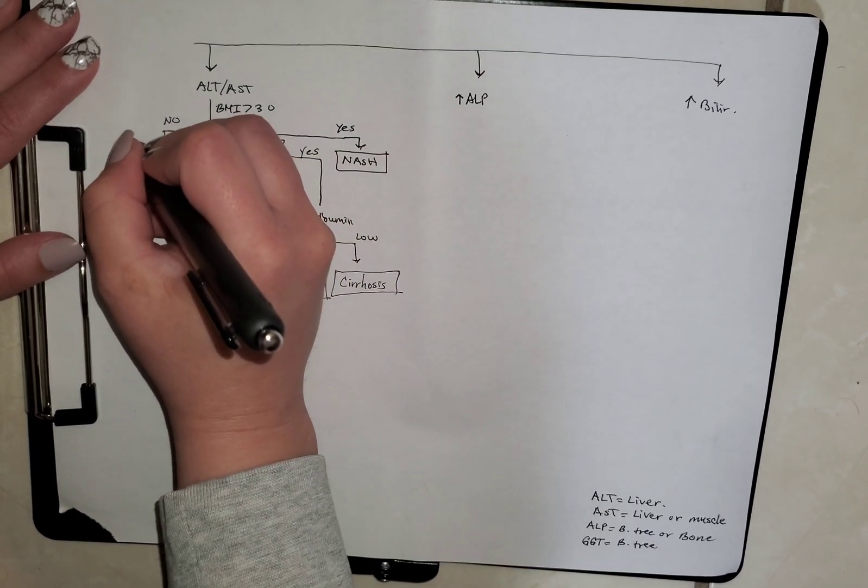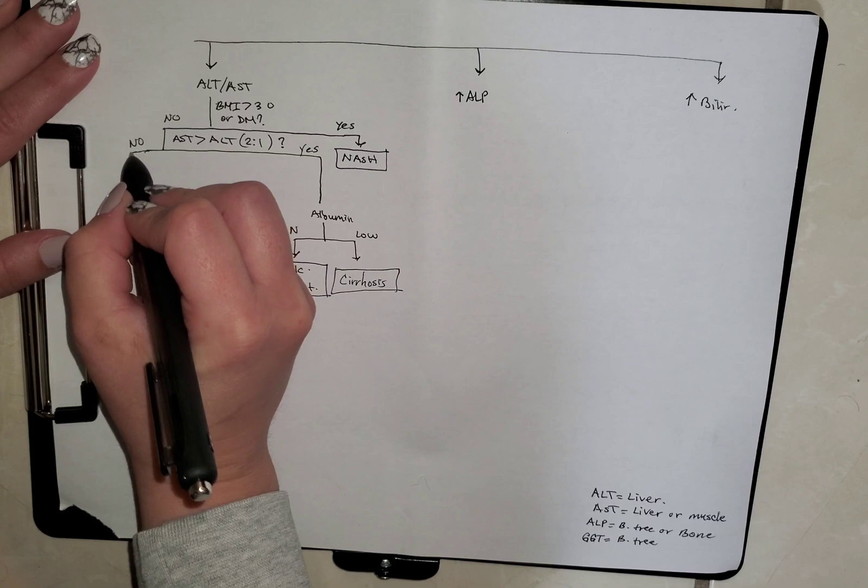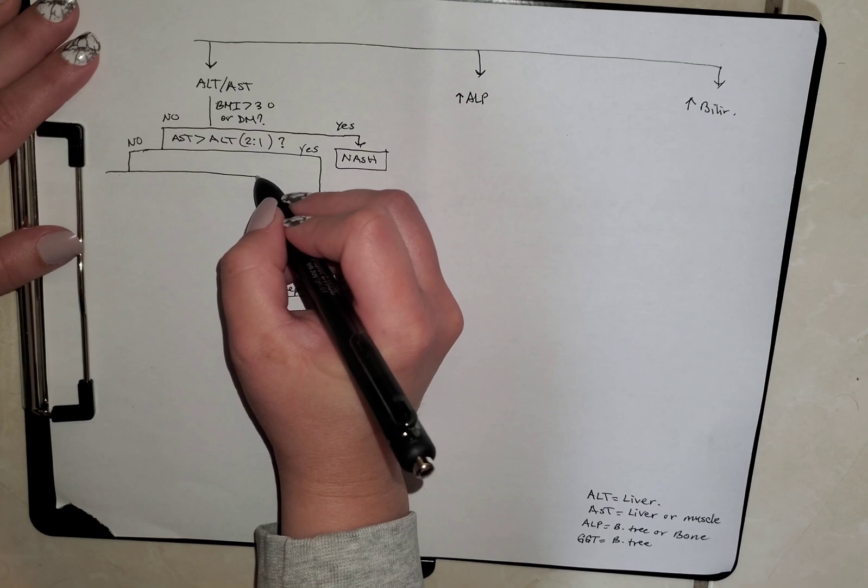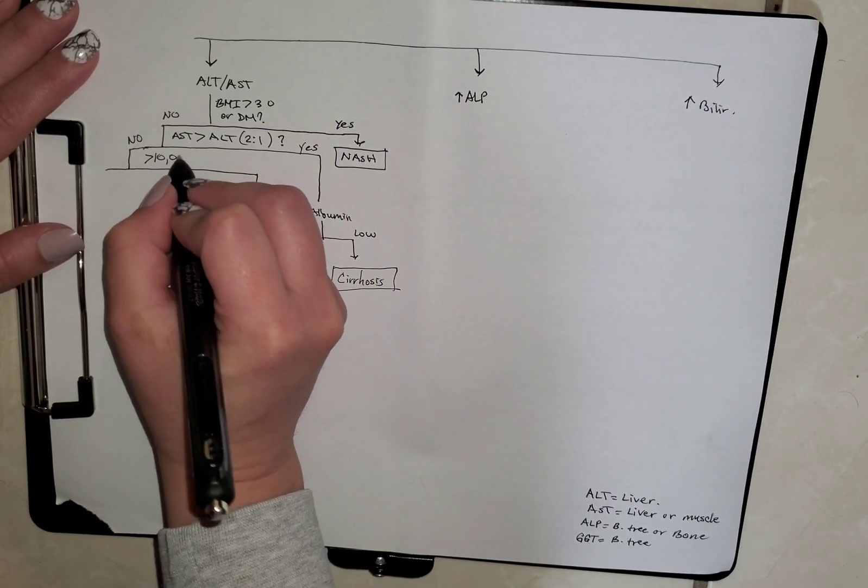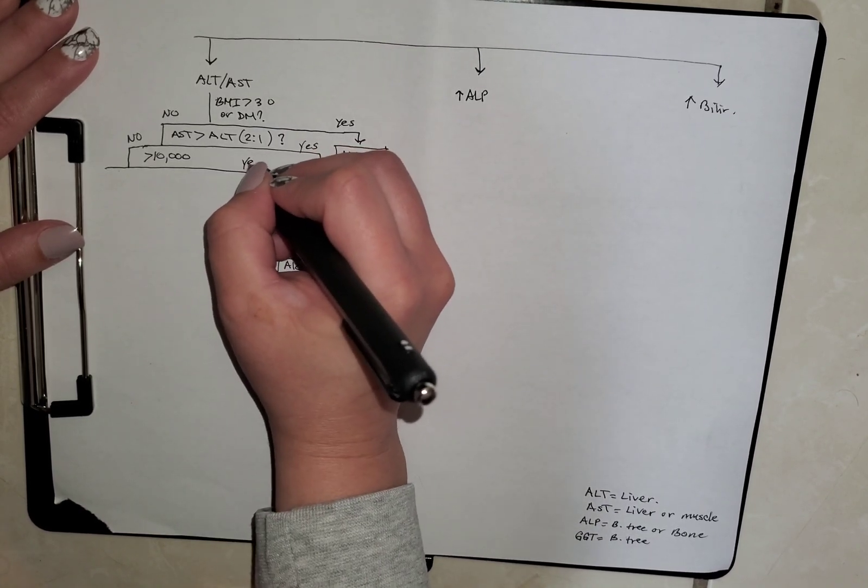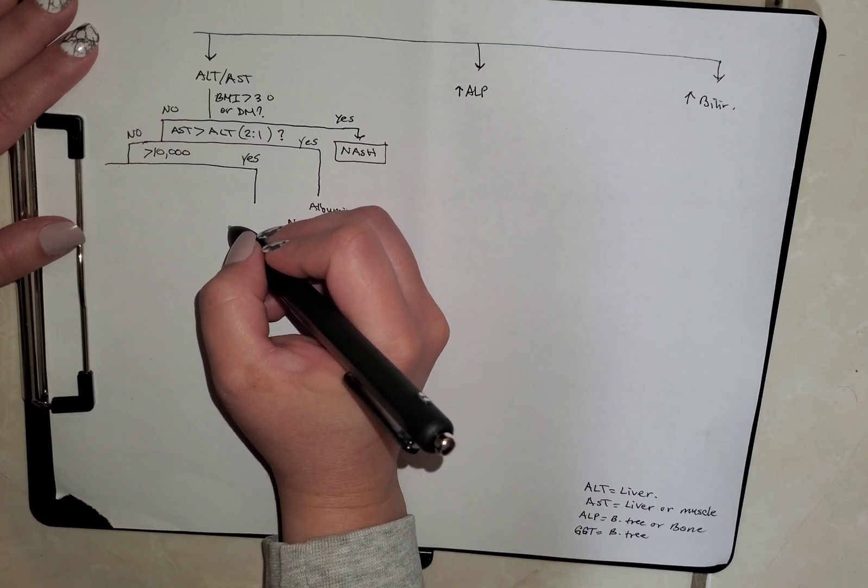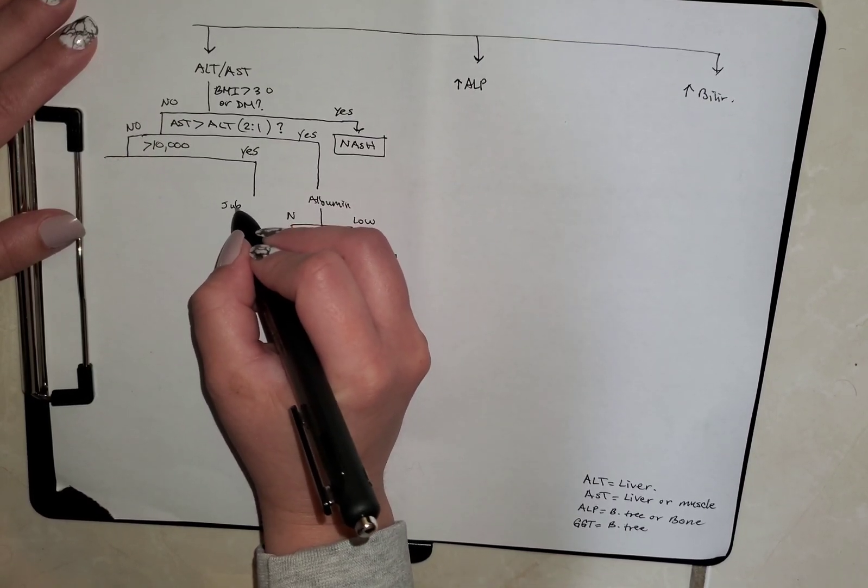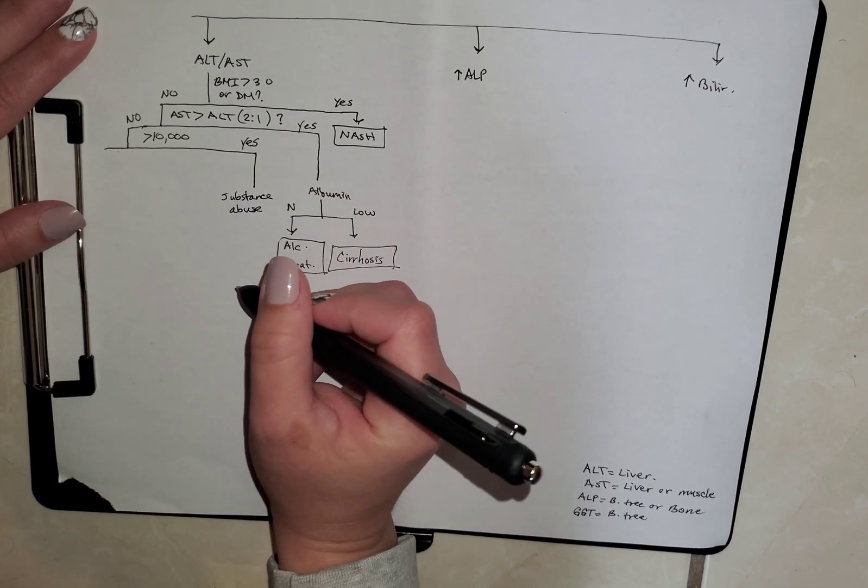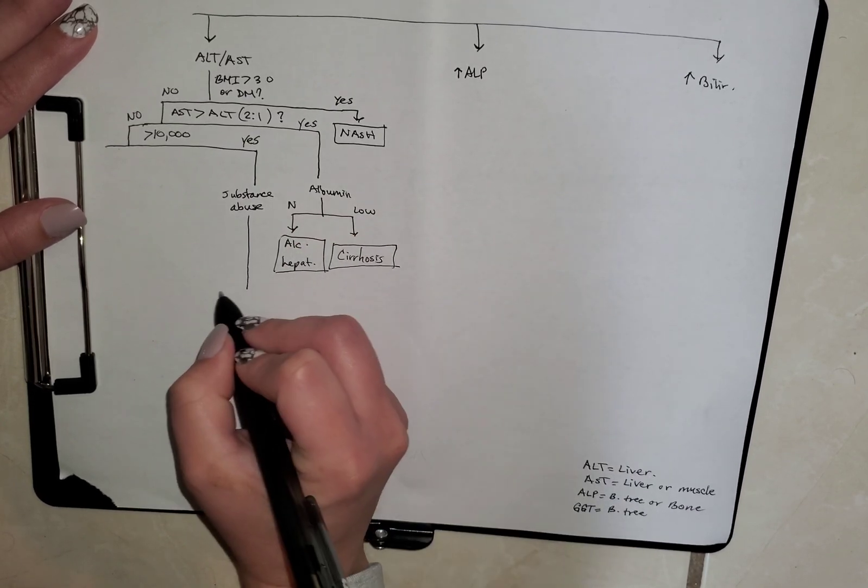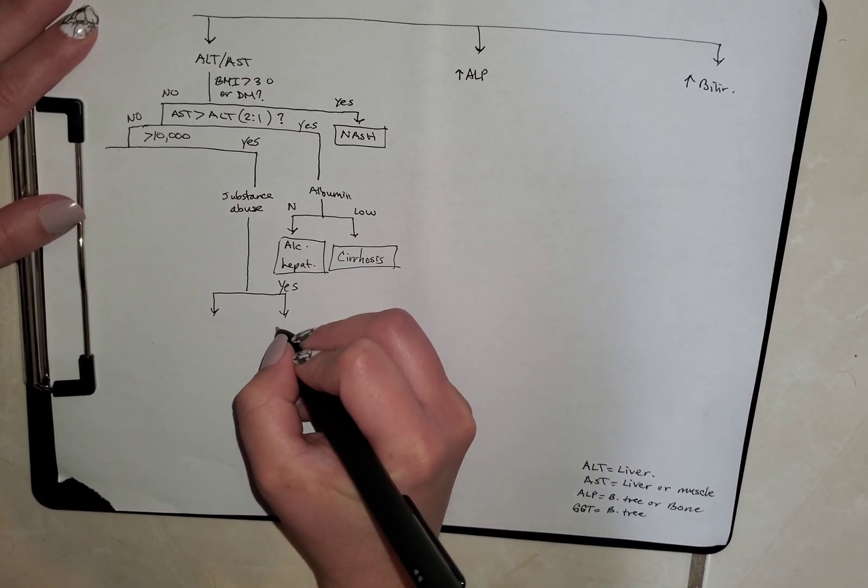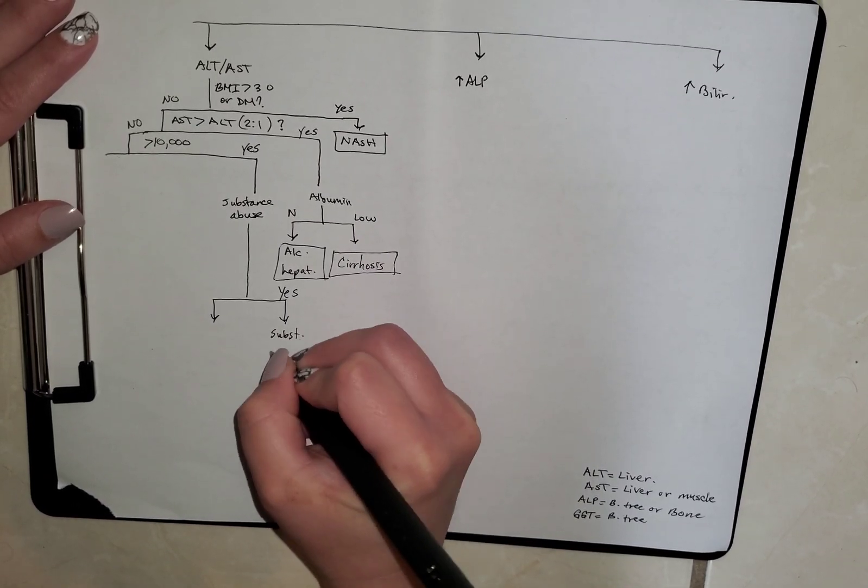Next, we're going to look at the rest of them. The next category is, let's look at how elevated these transaminases are. So let's say they're above 10,000, which is incredibly high. What we're going to look next, if that is the case, is substance abuse, meaning Tylenol, usually, or acetaminophen, same thing. If the answer is yes, then you've got substance-induced hepatotoxicity.